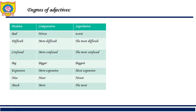For example: 'He is a bad boy' — 'He is worse than Dhanishta' — 'He is the worst among all the boys in his class.' Another example: 'It is a difficult situation' — 'It is more difficult than the previous situation' — 'This is the most difficult situation I have ever seen in the decade.'